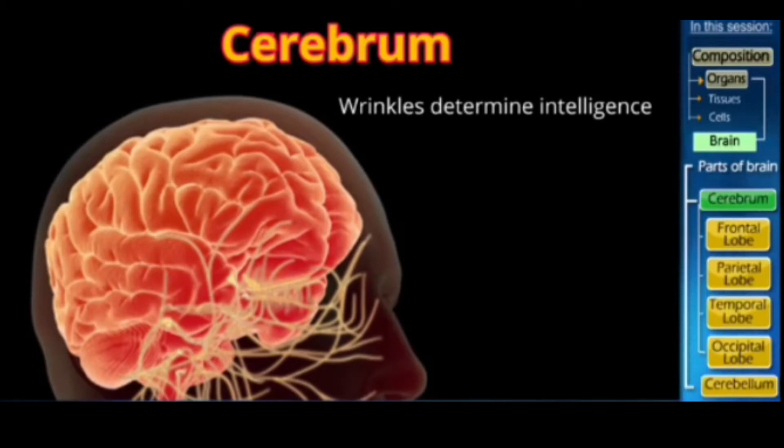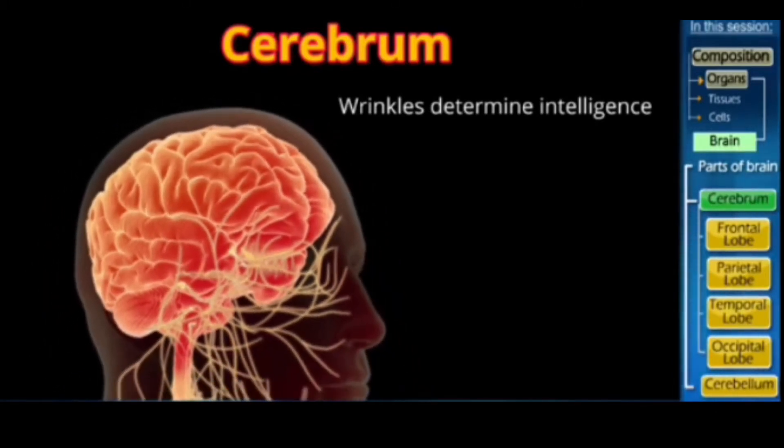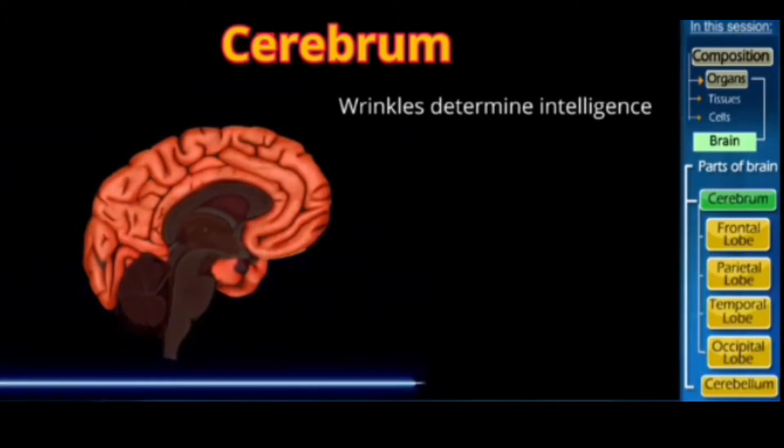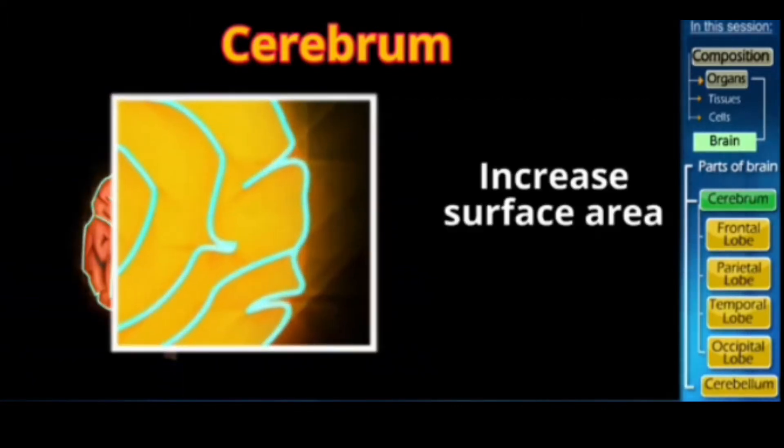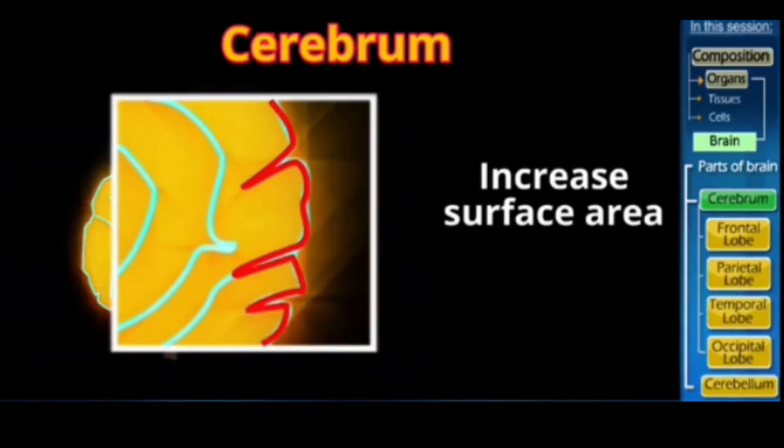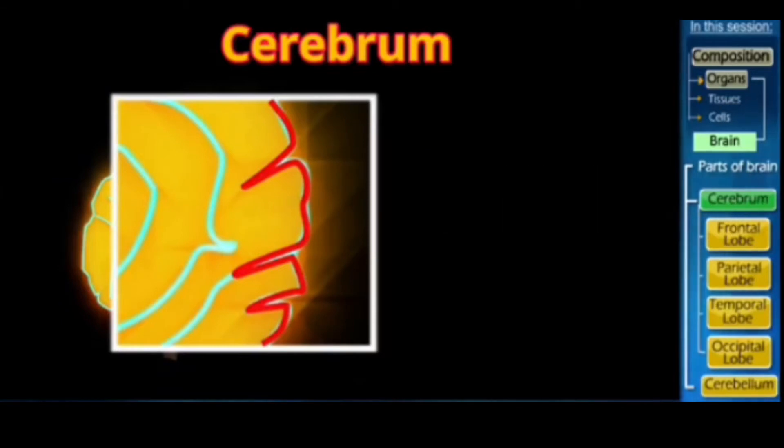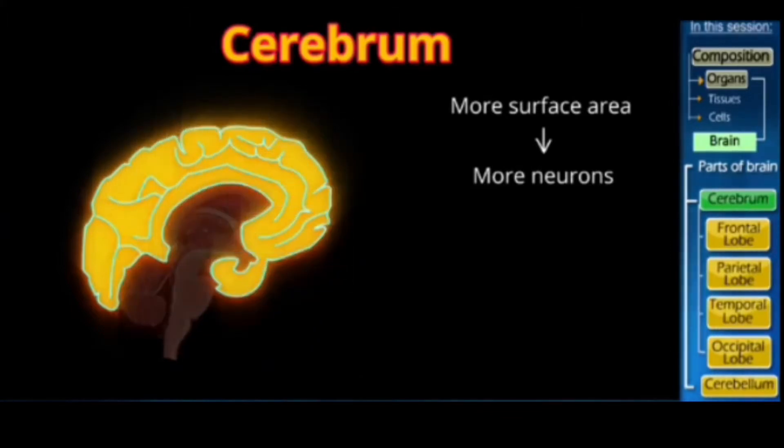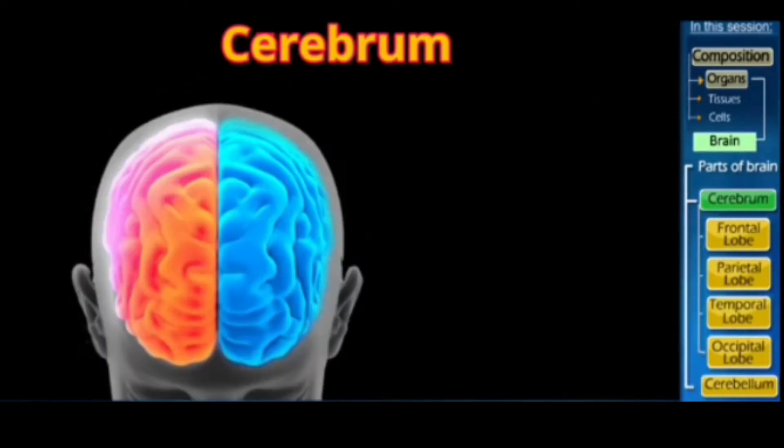The logic is that the wrinkles are formed to increase the surface area of the brain and brain tissues. So more the surface area, more the number of neurons in the nervous tissues, and more the neurons, more intelligent that individual is. And we learn that cerebrum is associated with intelligence.